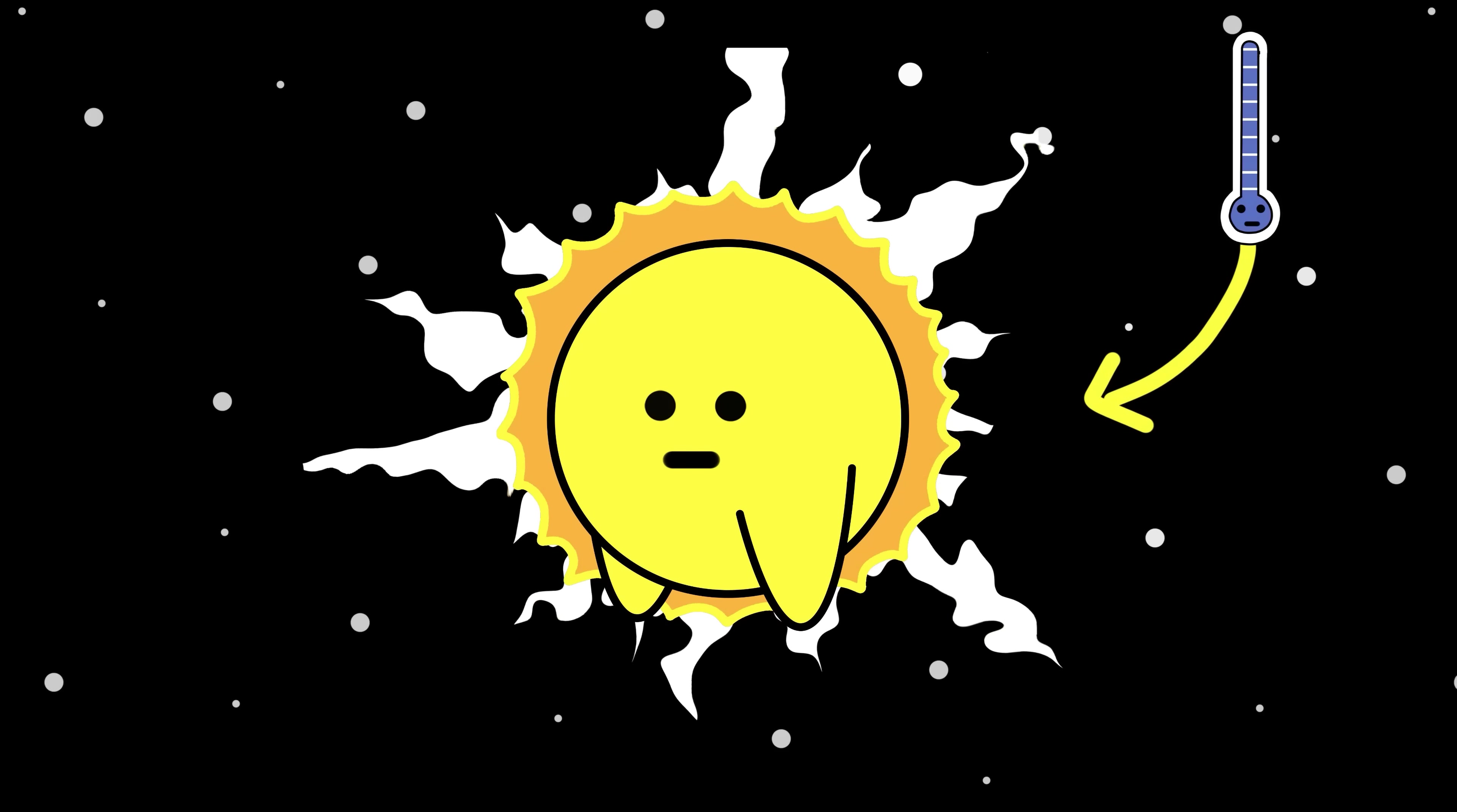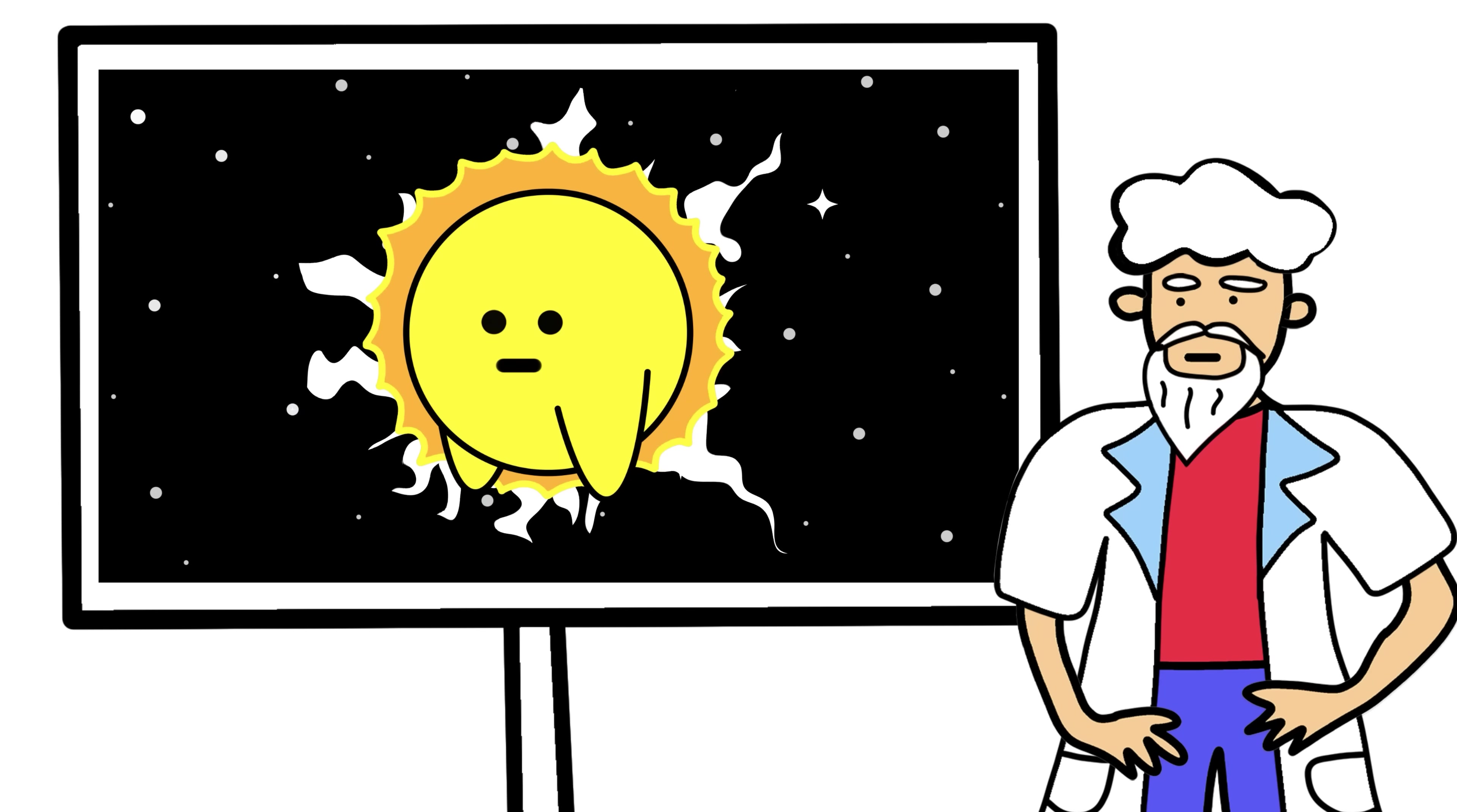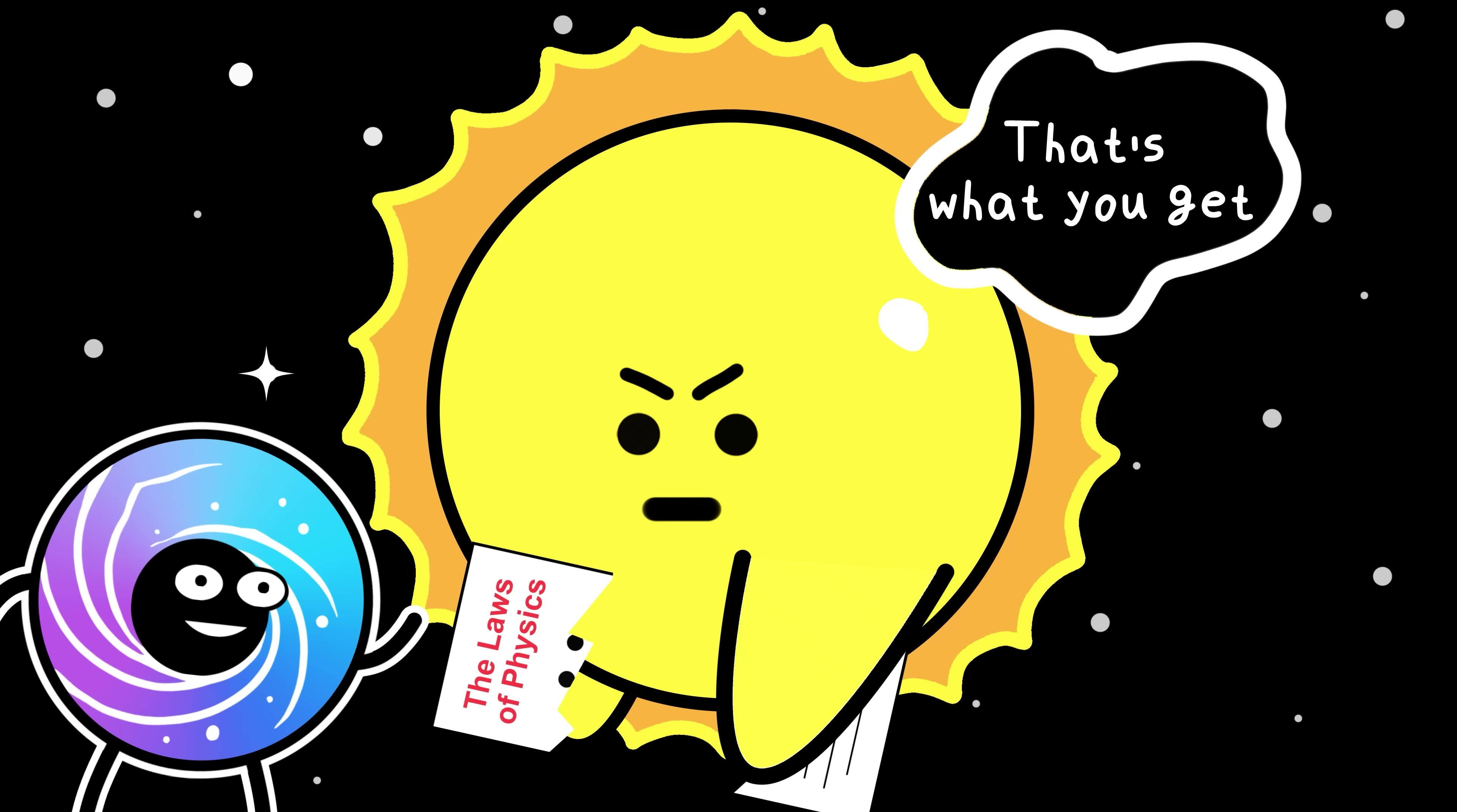That shouldn't be possible. Heat doesn't move from something cooler to something hotter. Every law of physics says this layer should be cold, yet it's the hottest part of the sun we can see. Scientists think it might be magnetic waves or a small solar flow heating it up, but none of the models match what we actually observe. The sun is breaking one of nature's most basic fundamental rules, and we still don't know why.